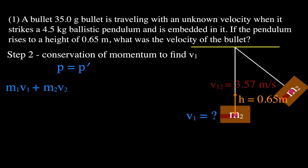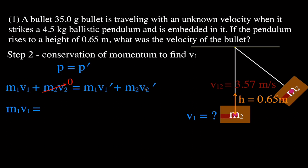Conservation of momentum states that momentum before equals momentum after. We have two objects: the bullet and the pendulum. Momentum before is the mass of the bullet times its velocity, plus the mass of the pendulum times its velocity, equal to the combined mass times velocity after the collision. Before the collision, the pendulum isn't moving, so its momentum is zero. This simplifies to M1V1 on the left, and on the right, since the bullet is embedded in the pendulum, we factor out: (M1 + M2) times the combined velocity after the collision.